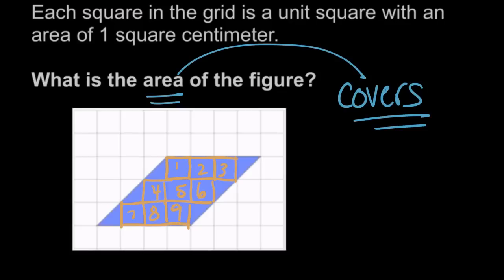So there's nine full square centimeters. Nine square centimeters. But that's not the entire area. That's not everything it covers. It also covers these small parts, these triangle shaped little spaces of area. And so we need to count those too.